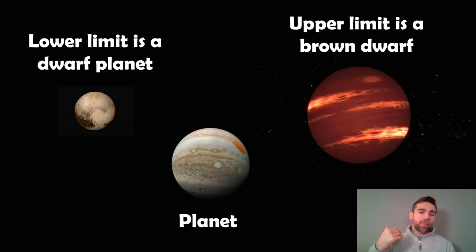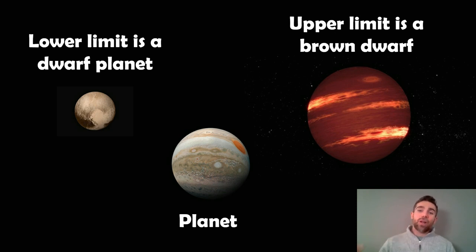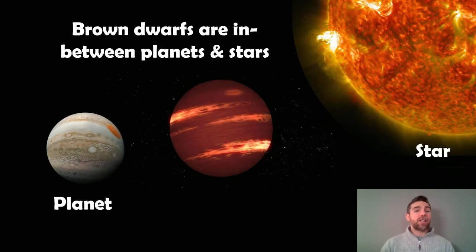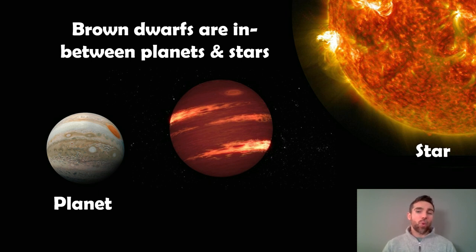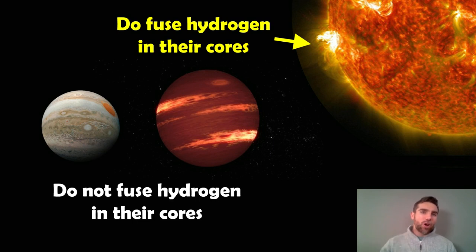So we now have dwarf planets, planets, and brown dwarfs. The lower limit is your dwarf planet, then you have planets, and the upper limit is going to be a brown dwarf before we get close to a star. What this tells us is that brown dwarfs sit in between a planet and a star. We would quite typically refer to these as substellar — they're not quite stellar size, below the size of a star, but they're also too big to really be a planet. Stars fuse hydrogen in their core, and planets and brown dwarfs don't — that's one of the big differences.